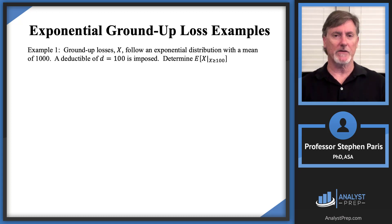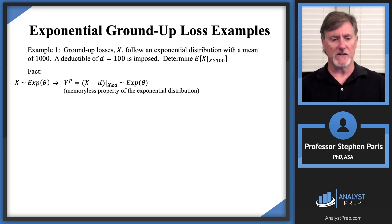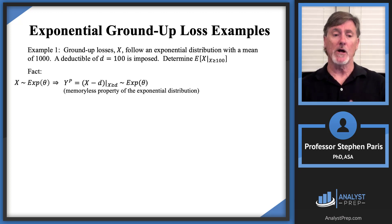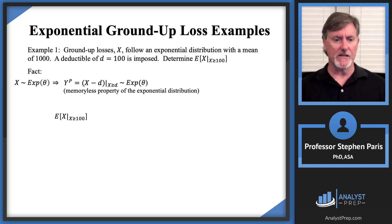Anytime I see the exponential distribution in the context of ground-up losses and deductibles, my first thought is the memoryless property of the exponential distribution. That states that if cap X, the ground-up loss, is exponential with mean theta, then the payment per payment random variable, cap X minus D given that cap X is greater than D, is also exponential with the exact same mean theta.